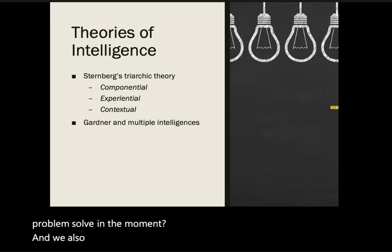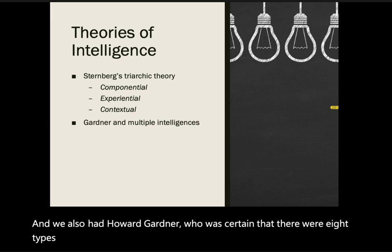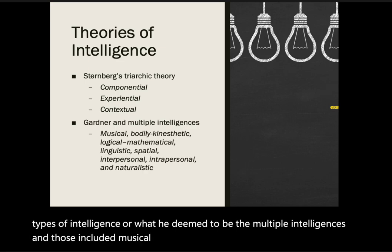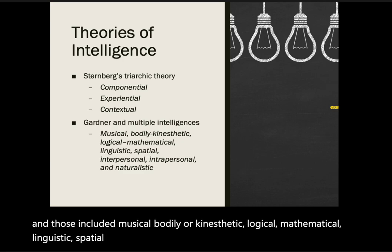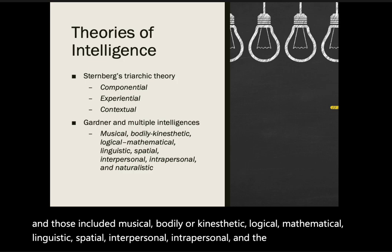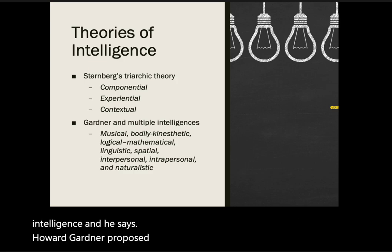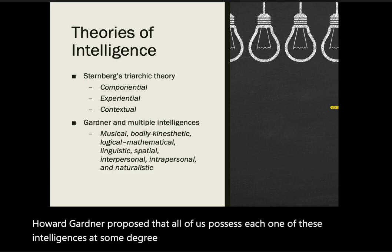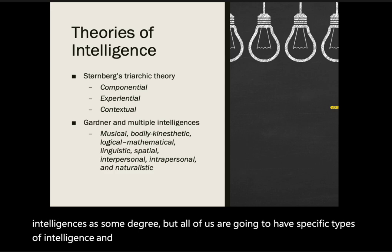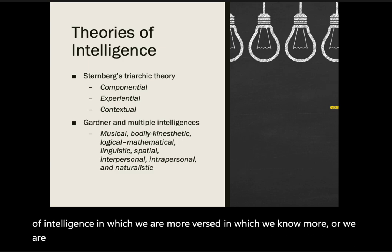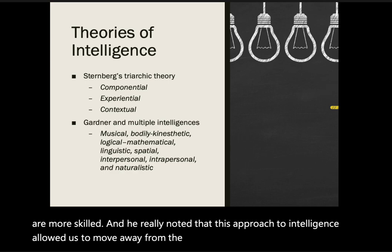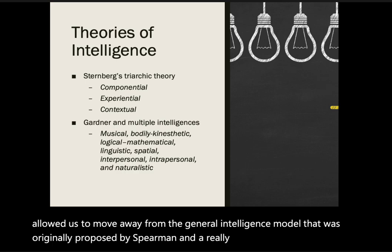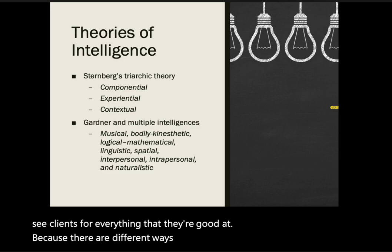We also had Howard Gardner, who proposed eight types of intelligence — what he called the multiple intelligences. Those included musical, bodily or kinesthetic, logical-mathematical, linguistic, spatial, interpersonal, intrapersonal, and naturalistic intelligence. Gardner proposed that all of us possess each of these intelligences to some degree, but we will have specific types in which we are more skilled. He noted that this approach allowed us to move away from the general intelligence model originally proposed by Spearman and gave us an opportunity to see clients for everything they are good at, because there are different ways we can express our intelligence.